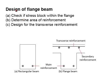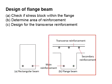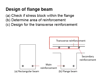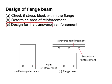Next, we come to the design of the flange beam. You need to know the differences in design between a rectangular beam and a flange beam. The design of a rectangular beam involves designing the main reinforcement bar. For the flange beam, you also need to design the transverse reinforcement, check the stress block within the flange, determine the area of reinforcement, and design the transverse reinforcement.